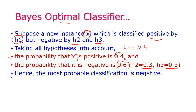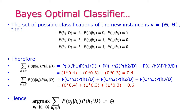Hence the most probable classification is negative, because the negative value 0.6 is higher than the positive value 0.4. Therefore x is classified as negative.